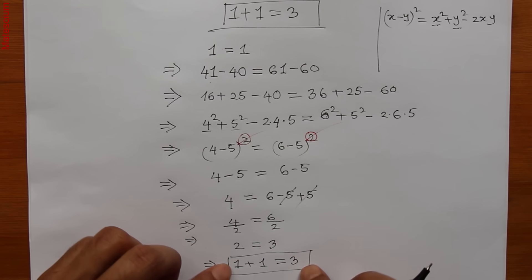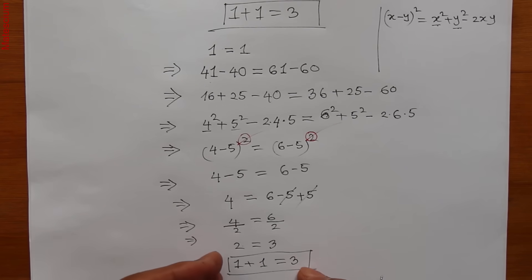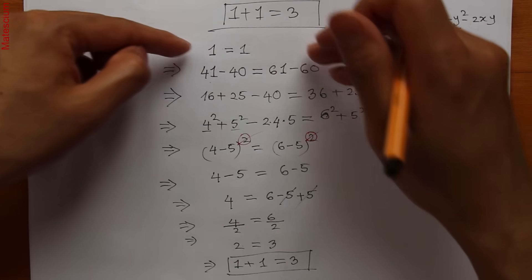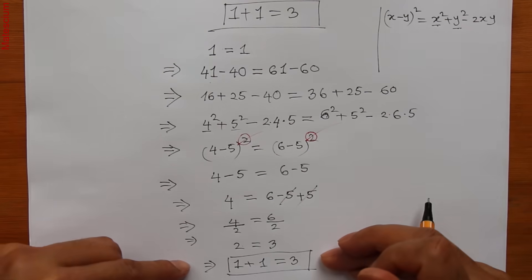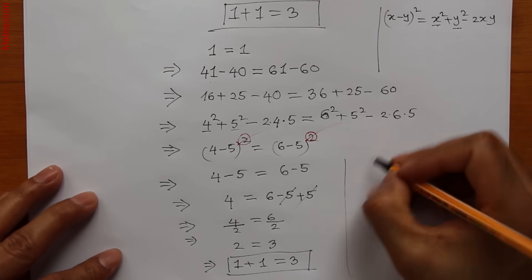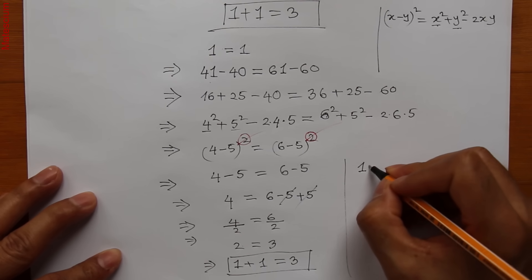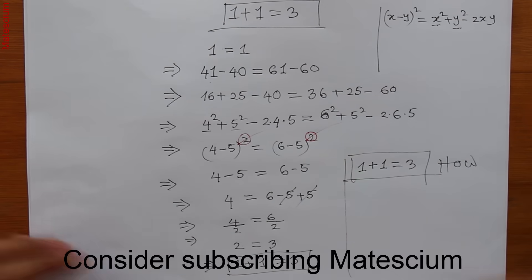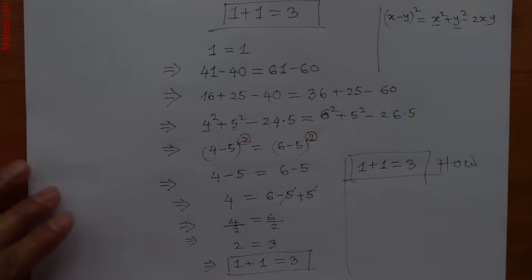And finally I have proved 1 plus 1 equals 3! This is a strange mathematical calculation and it does not follow the rules of mathematics. I got this strange result because somewhere in this calculation I did not follow the ground rules of mathematics. The question is — where did I make the mistake? If you know the reason, write it in the comment section.